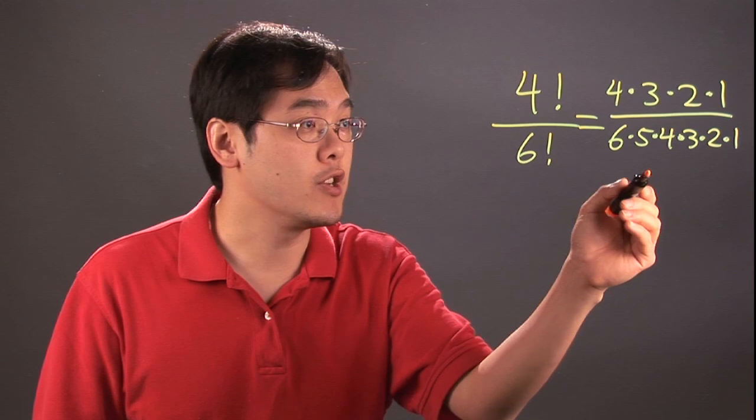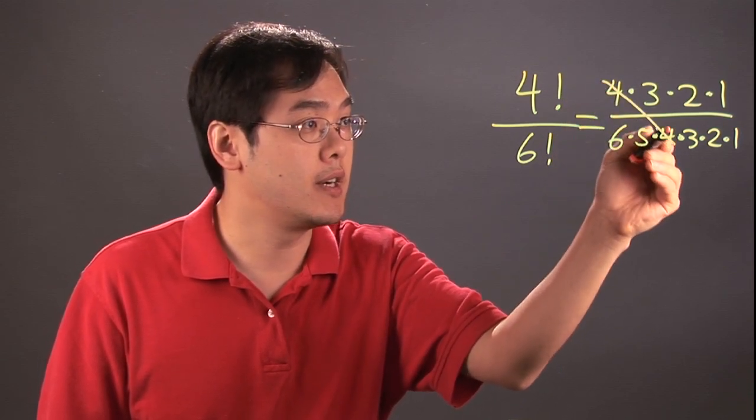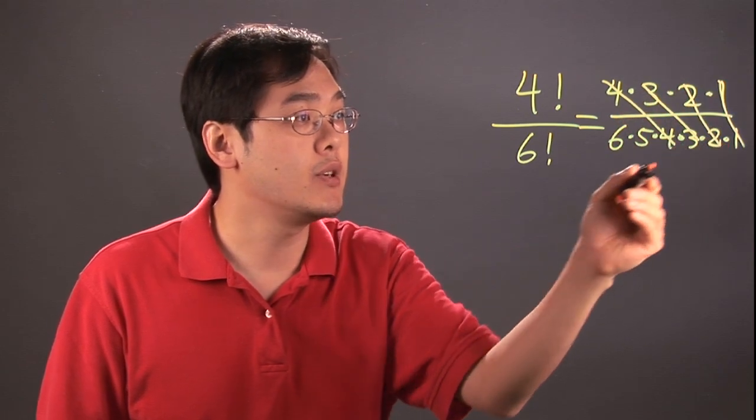For example, with multiplication, the 4 in the numerator cancels the 4 in the denominator. The 3s cancel with the 3. The 2s cancel and the 1s cancel.